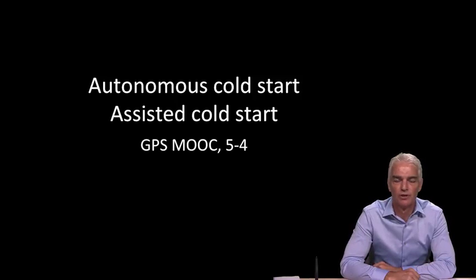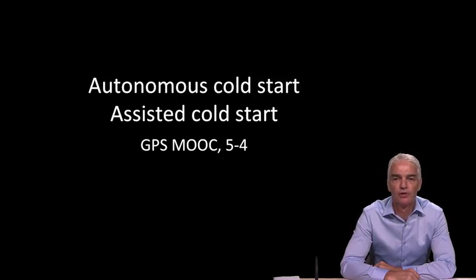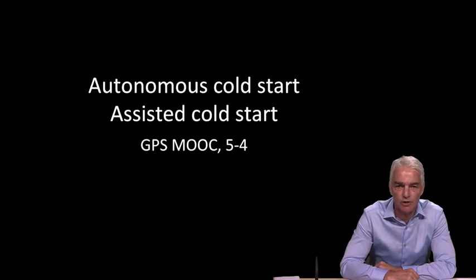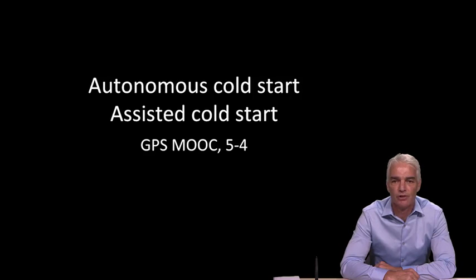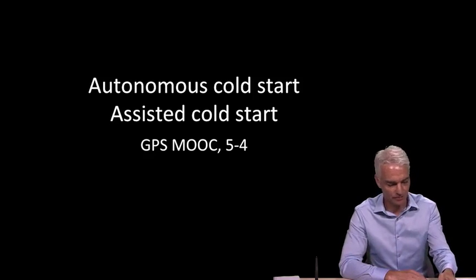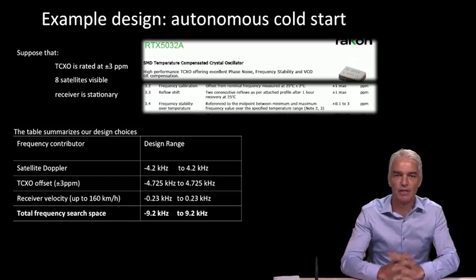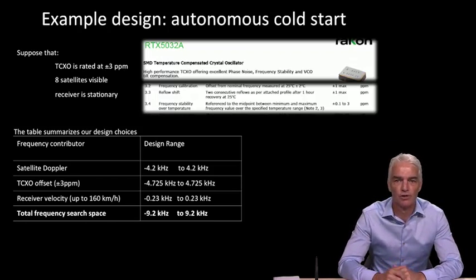Hello, and welcome to module 5.4. In this module, we're going to use what we've learned in the previous two videos and look at some examples of autonomous cold starts and assisted cold starts, and to show how when a receiver starts up with no prior information, how it goes about searching the acquisition search space to find the signal. So we're going to begin with an autonomous cold start.